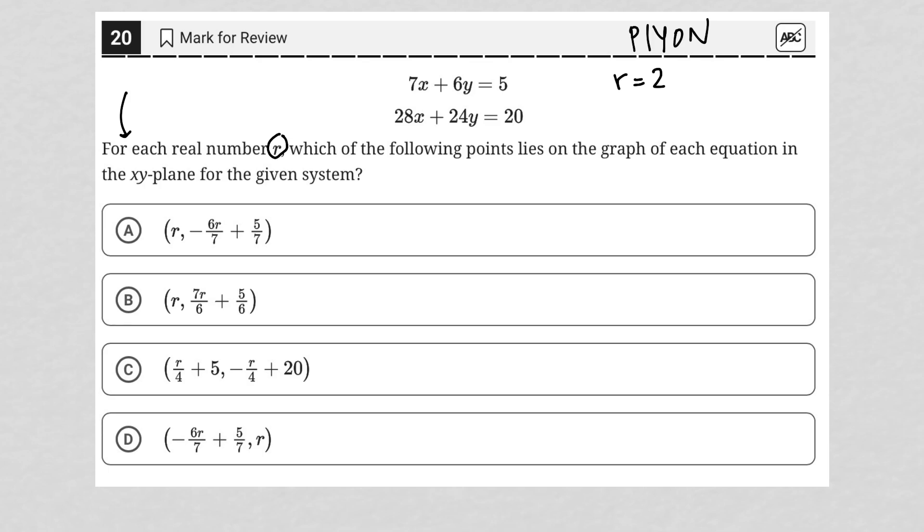So let's see how this looks. For choice A, if r is 2, this becomes 2, negative 12 over 7, because 6 times r is 12, and then plus 5 over 7, which would simplify to 2, negative 1, because negative 12 sevenths plus 5 sevenths is negative 7 sevenths, which becomes negative 1. So here's how we test it. If answer choice A is correct, then my x value should be 2, and my y value should be negative 1. Let's test that with the first equation. 7 times 2 plus 6 times negative 1 equals 5, according to what this equation says. But by plugging those numbers in, we get 14 minus 6, which does not equal 5. So that means choice A is incorrect. That's how we're going to test out our answer choices here.